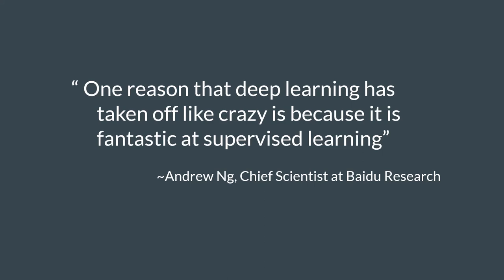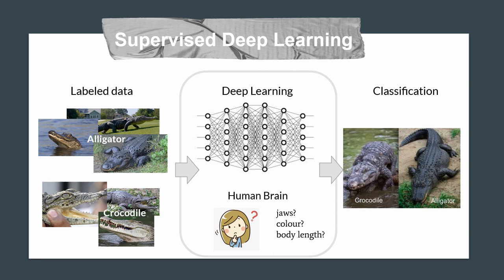In 2014, Andrew Ng, the chief scientist at Baidu Research, once claimed that one reason deep learning has taken off like crazy is because it is fantastic at supervised learning. A supervised deep learning is a training process that uses an annotated dataset, also known as labelled data, to learn before it can recognize and perform segmentation with high efficiency. Just like how human brains work, we always need to be taught the names or categories of objects before we can recognize and tell the difference between them. Taking an example by labelling pictures of alligators and crocodiles, deep learning will be able to learn the characteristics of each animal by itself and categorize the two animals accurately, just like humans.